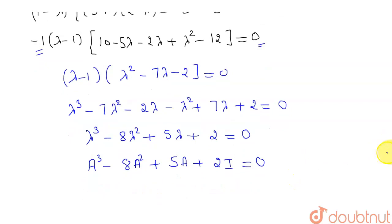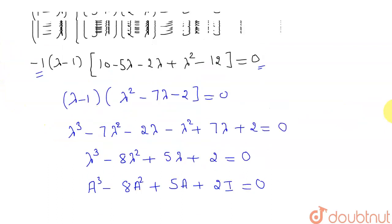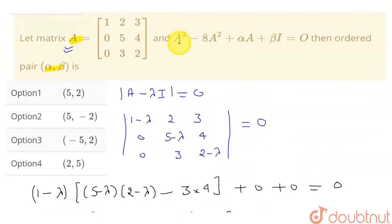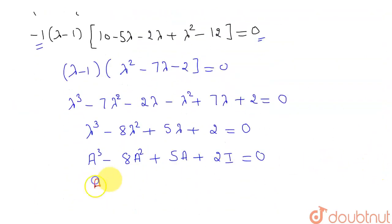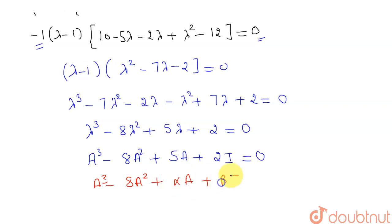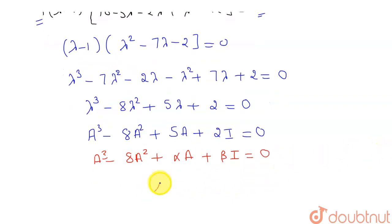Now comparing this with the given expression A³ − 8A² + αA + βI = 0, we can directly compare. This gives α = 5 and β = 2.